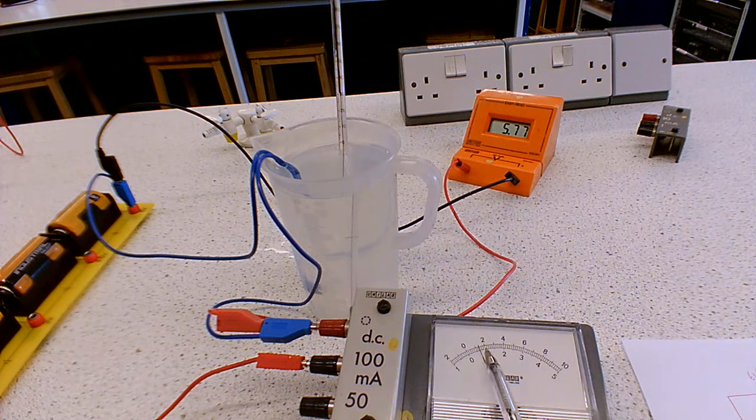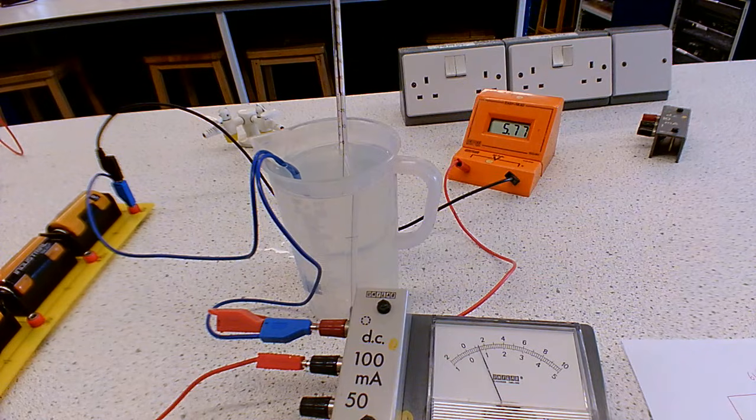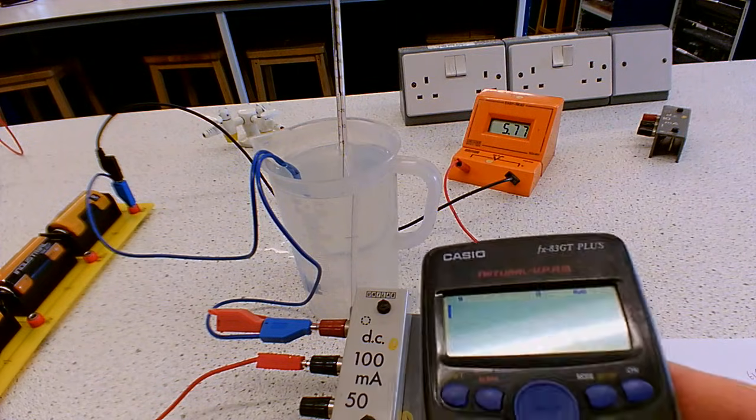Our current on here, that's, I reckon, at 1.3, so that's 13 milliamps on there. So then, let's calculate our potential difference.